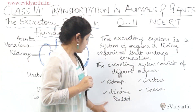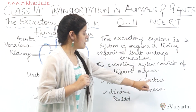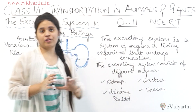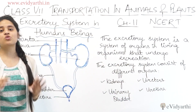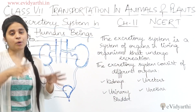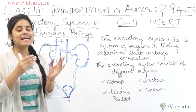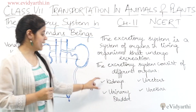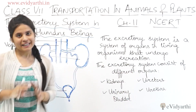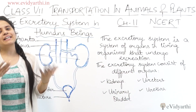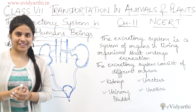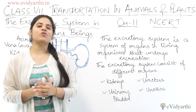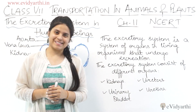The organs of the excretory system are the urinary bladder, ureters, and urethra. So these are the four important organs of the excretory system, and now we will read about and understand each of them in detail.